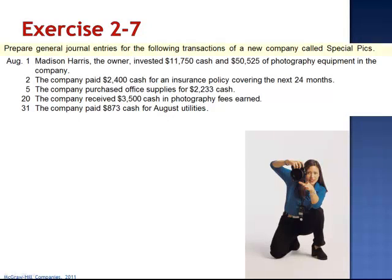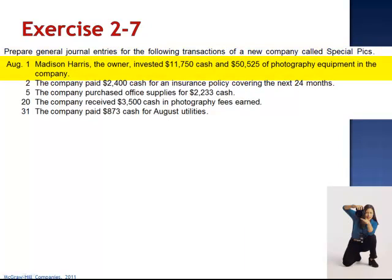Exercise 7. Prepare general journal entries for the following transactions of a new company called Special Picks. On August 1st, Madison Harris, the owner, invested $11,750 cash and $50,525 of photography equipment in the company.